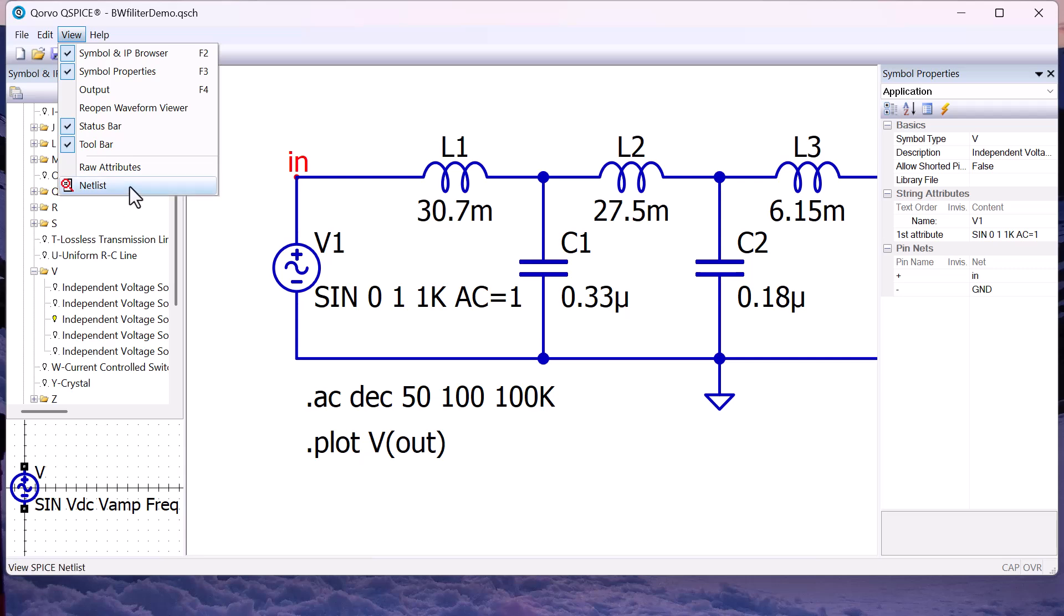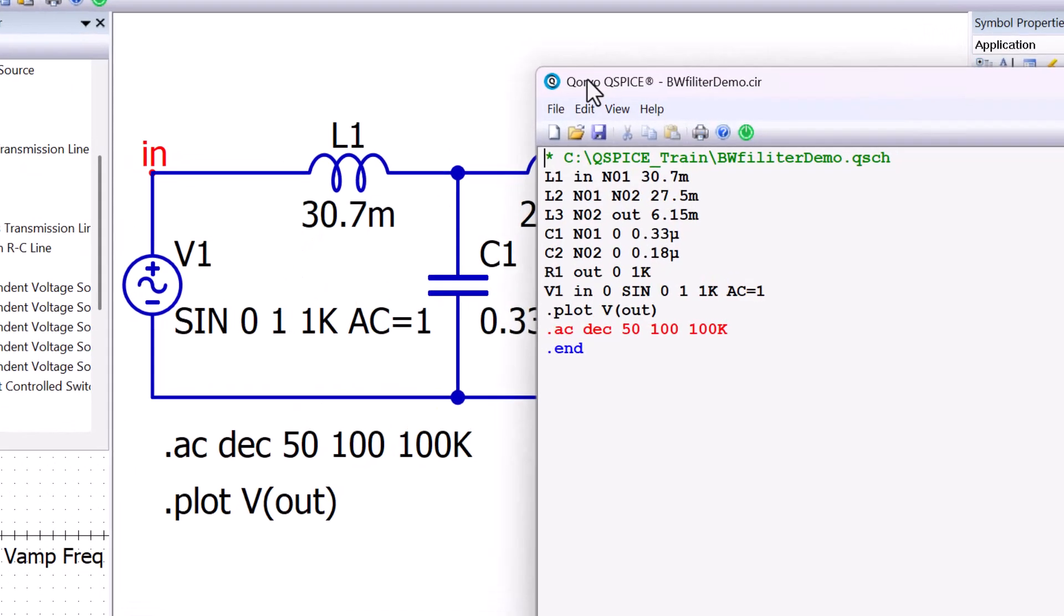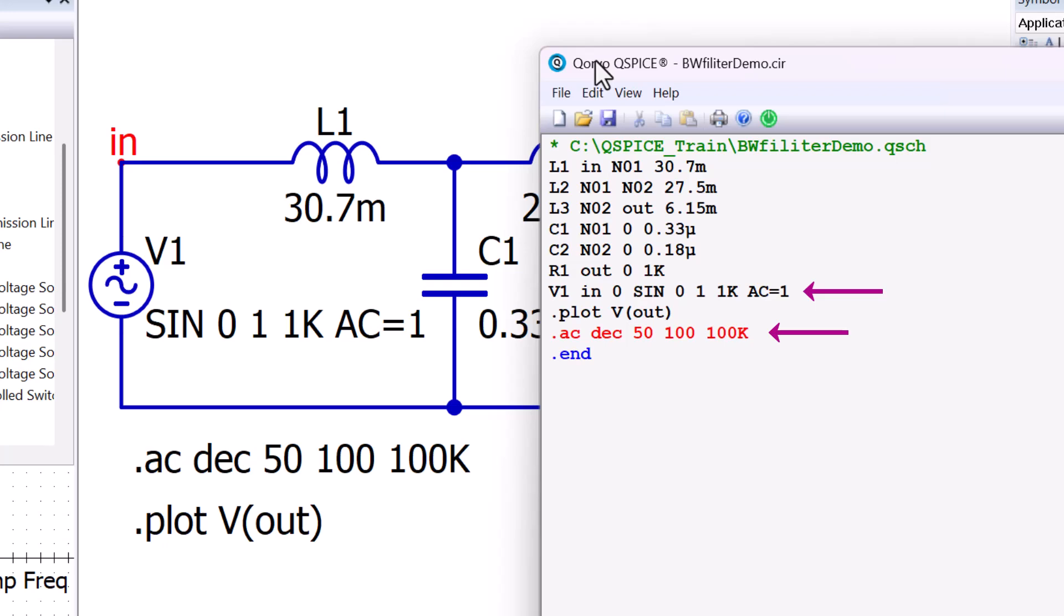Check the netlist. We see the lines for both the AC source and the AC simulation command.